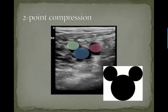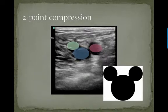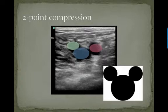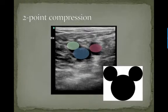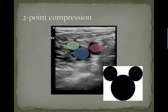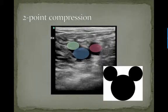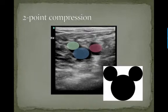Here we can see the greater saphenous in green, the common femoral vein in blue, and the femoral artery in red.